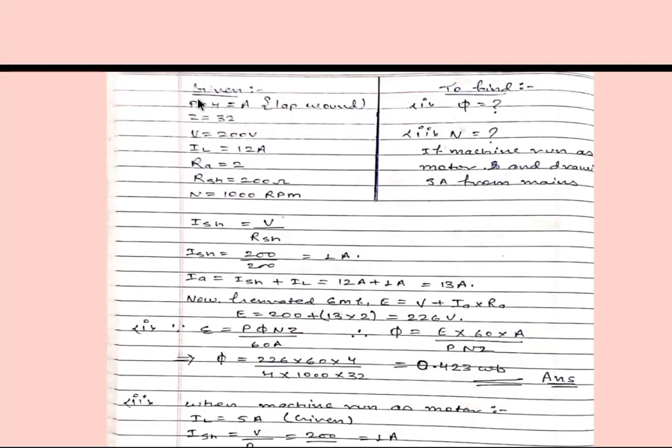First of all we will write what is given in the question and what we have to find. Given is pole P equals 4, and it will be A also because it is lap wound, so P equals 4 equals A. Z equals 32, voltage equals 200 volt, IL load current is 12 ampere, armature resistance RA is 2 ohm, shunt resistance RSH equals 200 ohm, N is 1000 rpm. We have to find flux and then speed if machine runs as motor and drawing 5 ampere from mains.